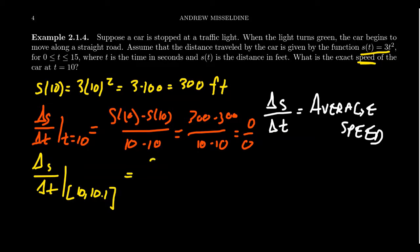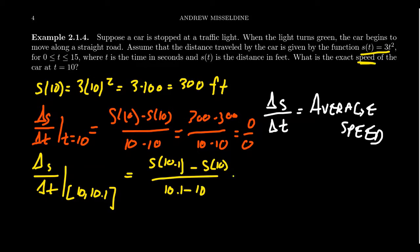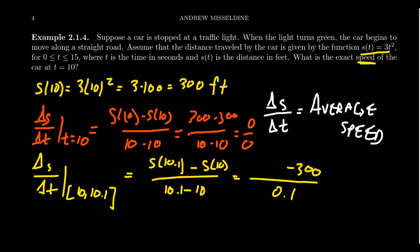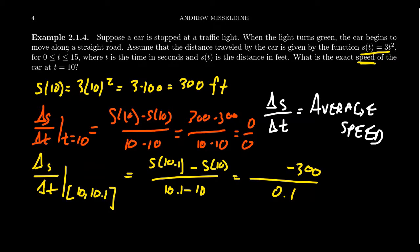We would look at s(10.1) minus s(10) over 10.1 minus 10. The denominator is just 0.1. s(10) we already know is 300. By a similar calculation, if you take 10.1, square it, and multiply by 3, you get 306.03. Subtracting those in the numerator and dividing by 0.1, you end up with 60.3 feet per second.